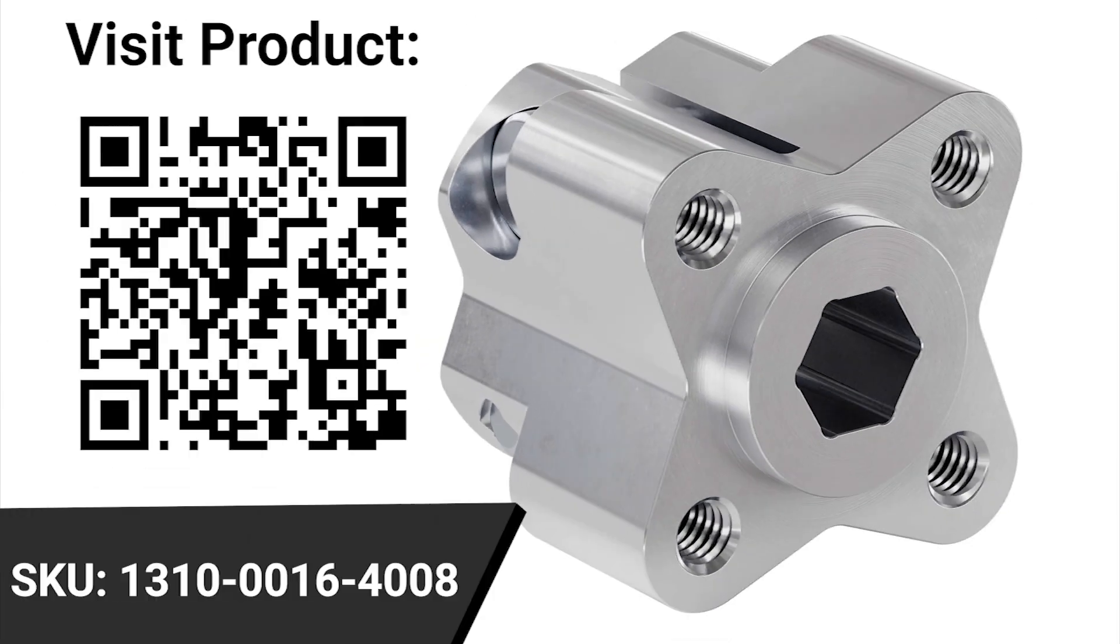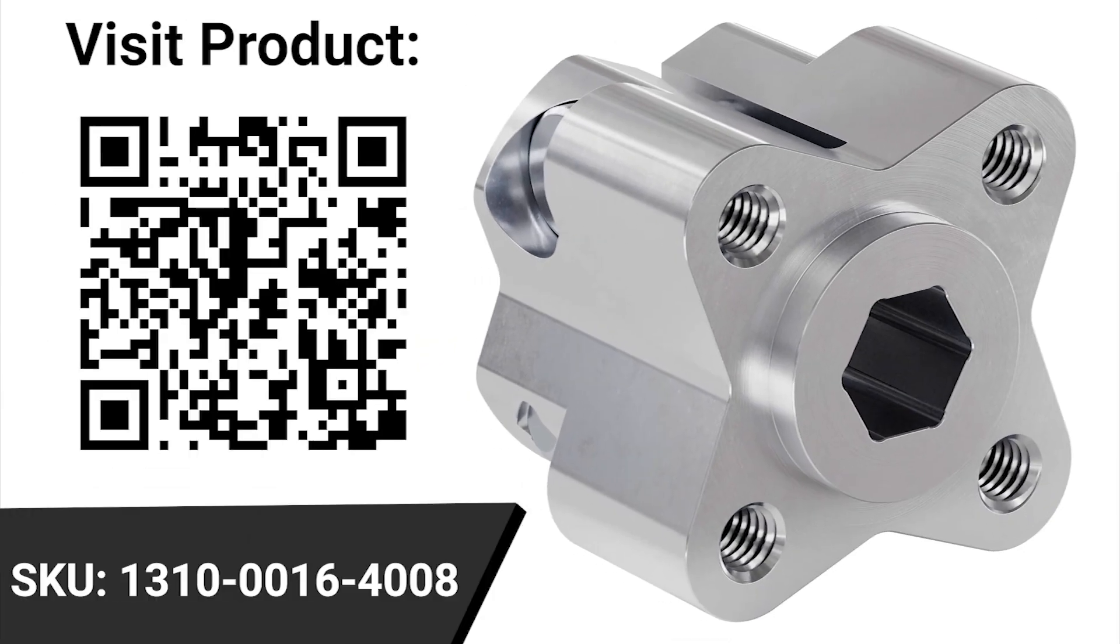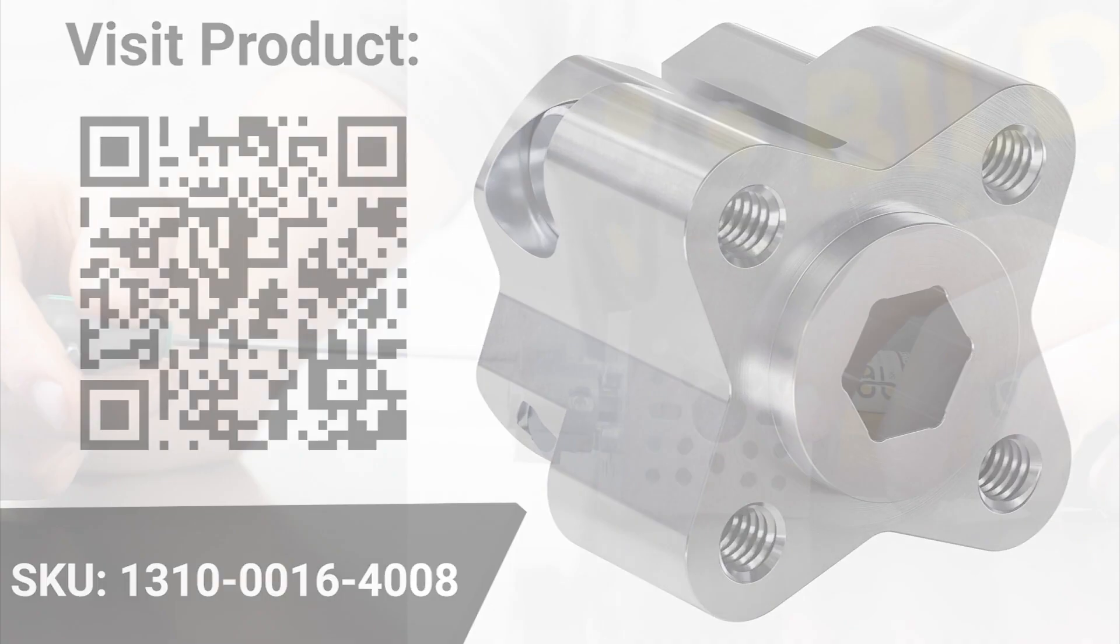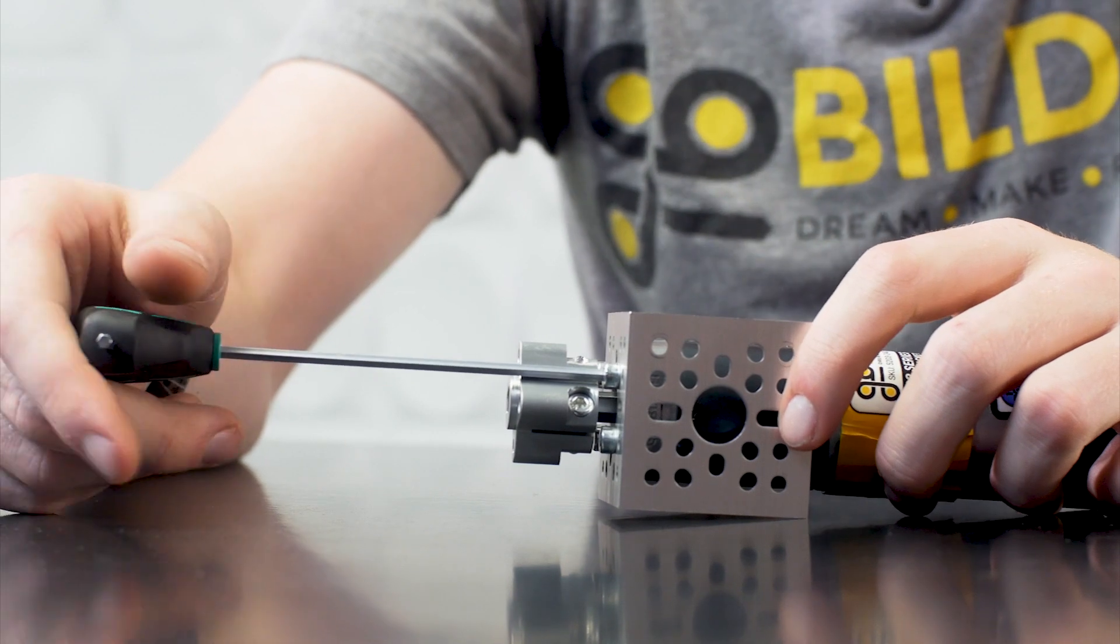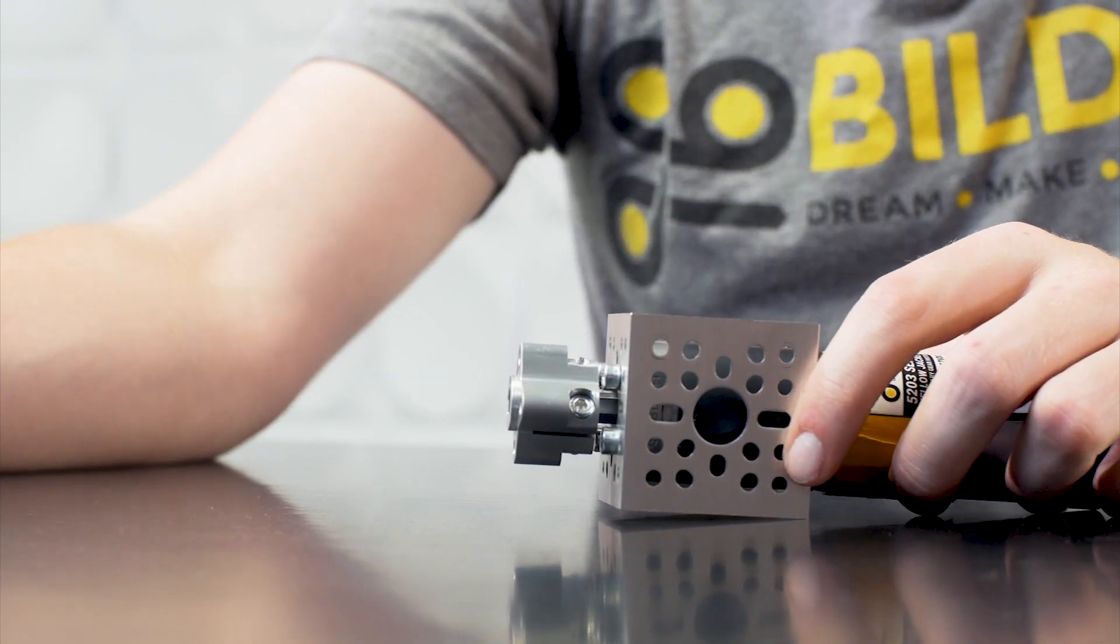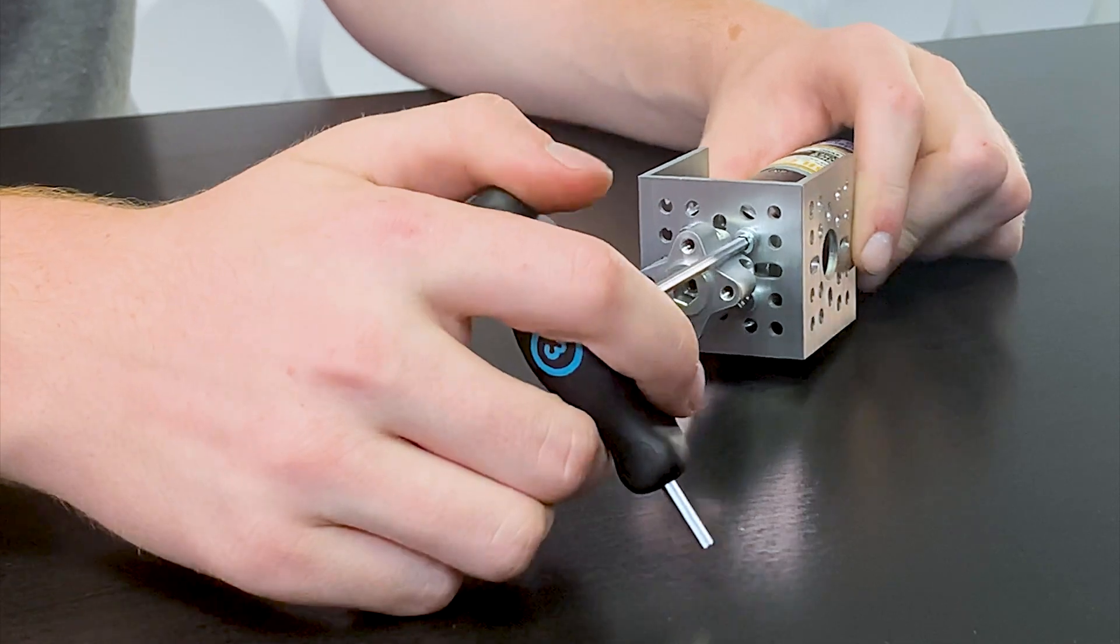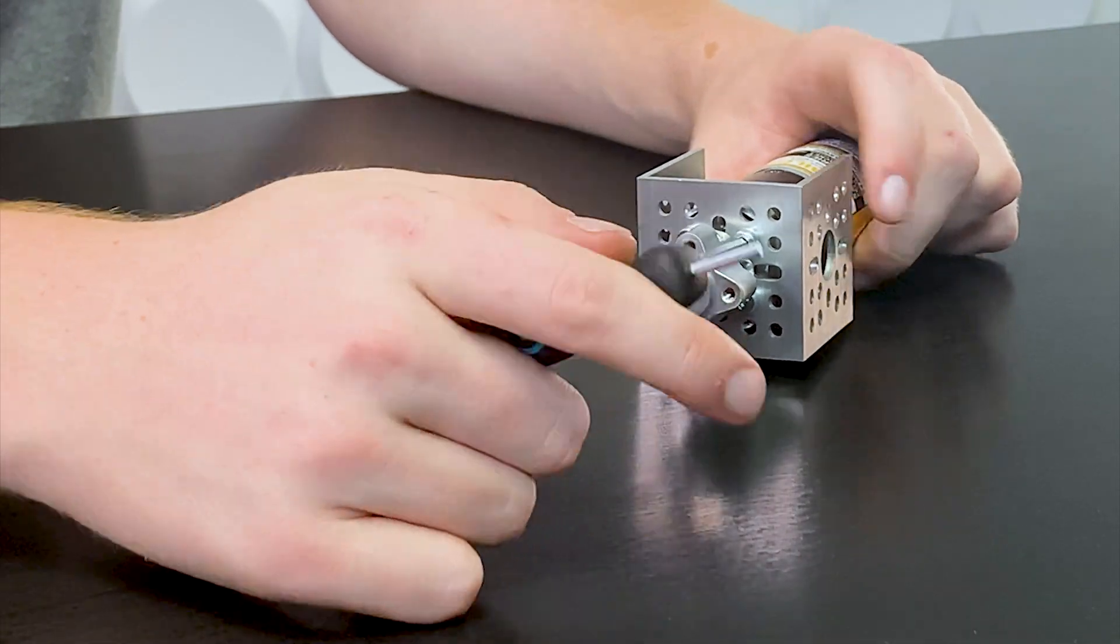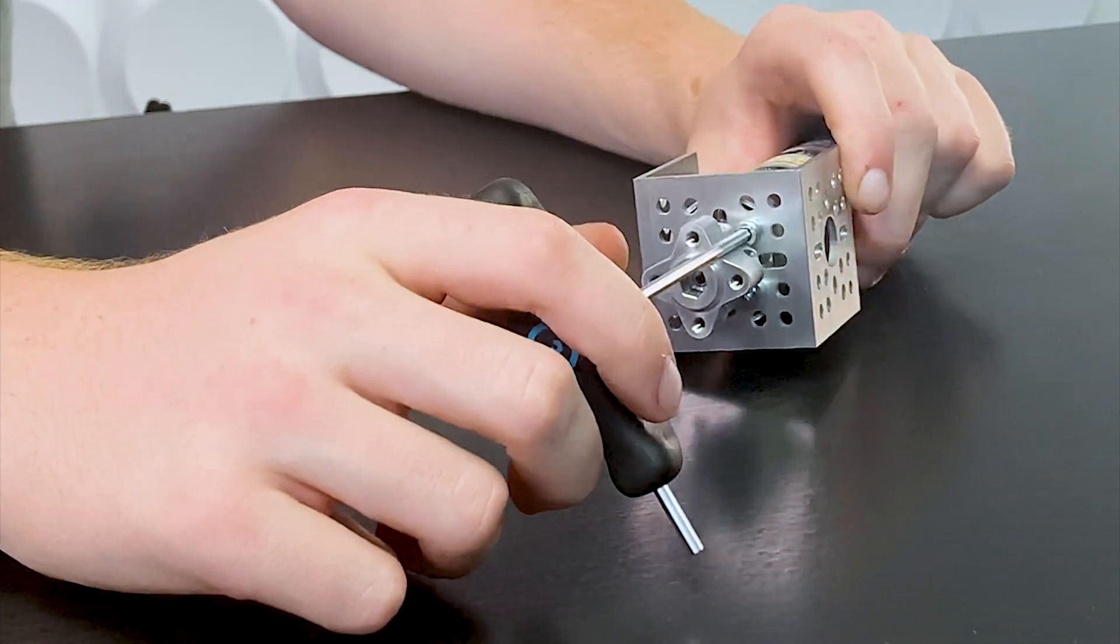The 8mm Rex Hyperhub received a small but handy update in this revision. As you can see here, it essentially has been given some clearance so that a hex key can pass by it. This lets you access the screws that hold on a motor or other screws that might be on the other side of the hub in an assembly.